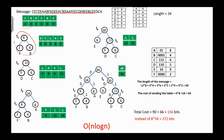We construct the Huffman tree by repeatedly selecting the two least frequent characters or nodes and combining them. First we get one node, which is inserted into the list. Next we select D and C, whose total is 11, and insert node I2 in its proper place. Then we select I1 and A to form I3, inserted into the list. Next we select A and I2 to form I4. Now the list contains I3 and I4. We can use a priority queue to implement the list. The total is 34, which is the size of the message.